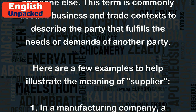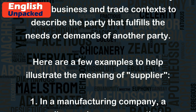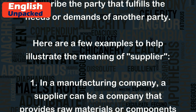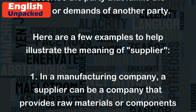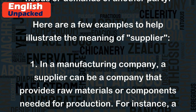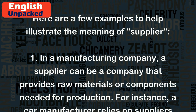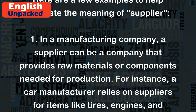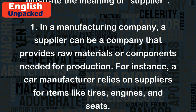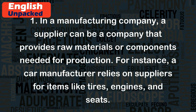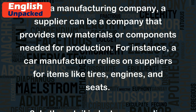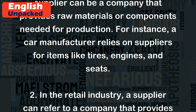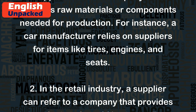Here are a few examples to help illustrate the meaning of supplier. 1. In a manufacturing company, a supplier can be a company that provides raw materials or components needed for production. For instance, a car manufacturer relies on suppliers for items like tires, engines, and seats.